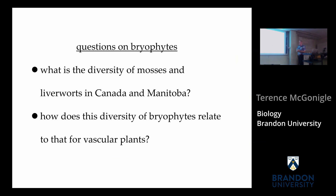So what are the questions on bryophytes? What is the diversity of mosses and liverworts in Canada and Manitoba? The answer is we're still working on it — it's not that far advanced. And how does the diversity of bryophytes relate to that for vascular plants? We know that as we come up through the gradient from the equator to the poles, we lose diversity — we lose vascular plants. Does a similar pattern hold to the same degree for mosses? Does it behave the same way?